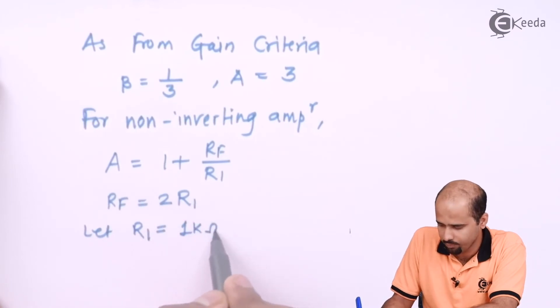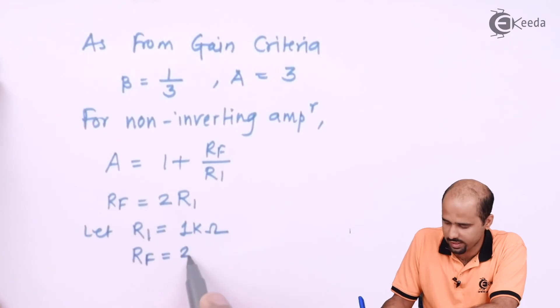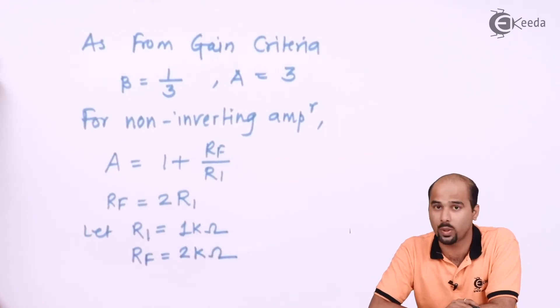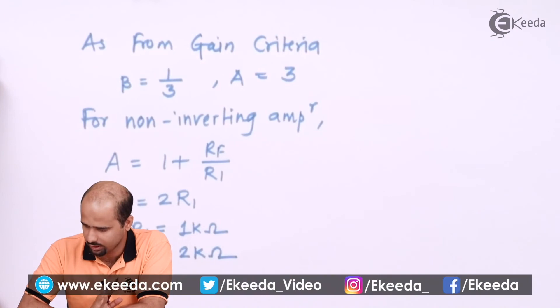So we will set that let R1 = 1 kilo ohm. Then automatically RF will have to set at 2 kilo ohm, that is a twice value.